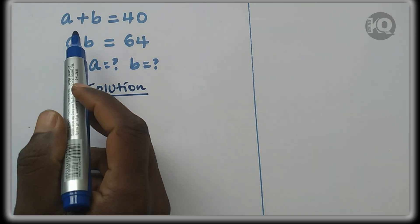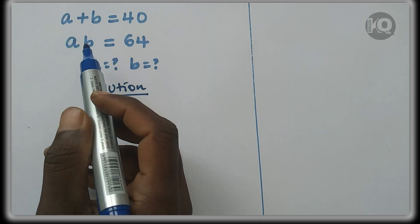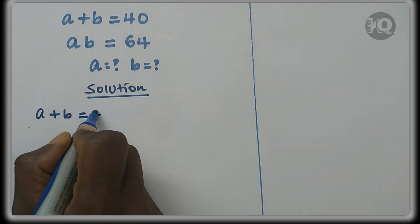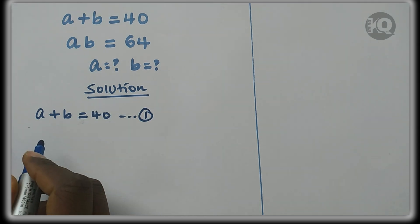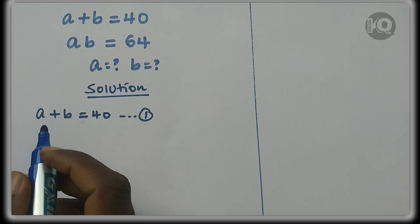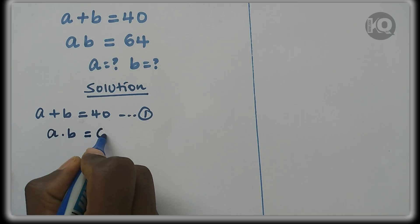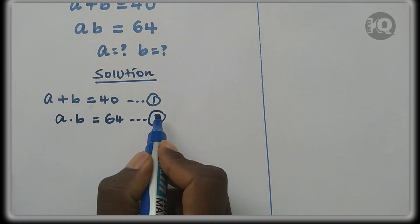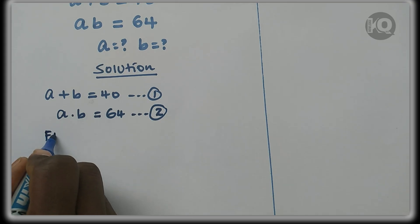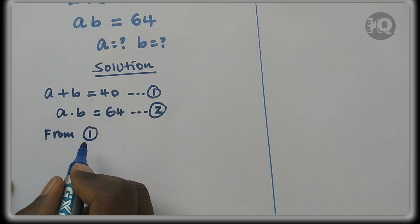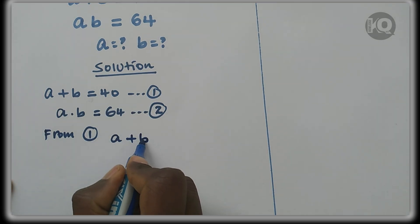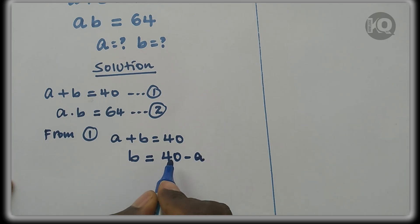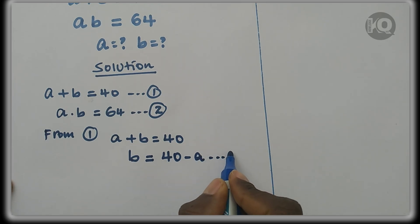In order to find the value of A and B, first let's assign each equation. Let A plus B equals 40 be equation 1, and A times B equals 64 be equation 2. From equation 1, we have A plus B equals 40, so we can find B which equals 40 minus A. Let's assign this as equation 3.